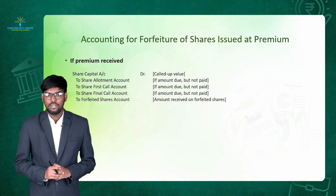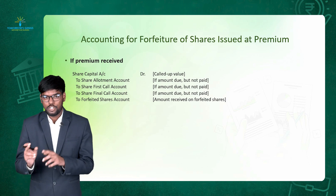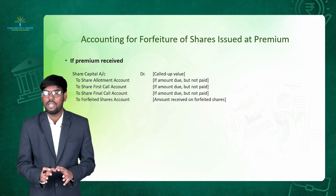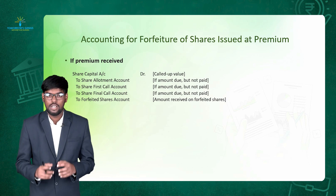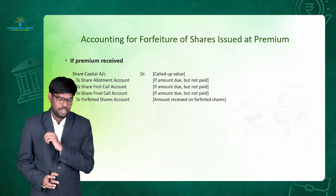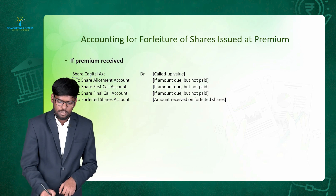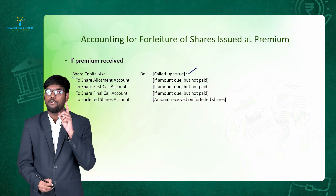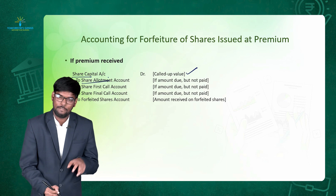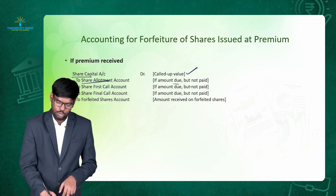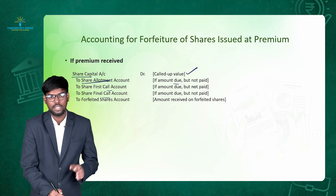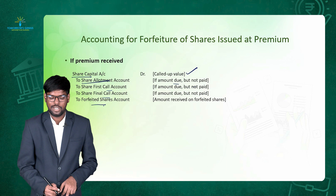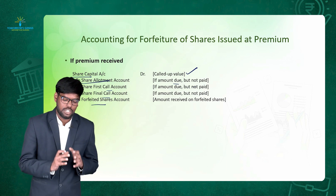Now we discuss forfeiture of shares when the premium is already received. When the premium has already been received, the general entry is the same as for issue of shares at par, because the premium amount already received is not going to be repaid. The entry is: debit share capital account for the called up value, then credit the amount not received — for example, credit share allotment account for amount due but not paid, or credit share first call account or share final call account for unpaid calls — and finally credit share forfeiture account for the amount received so far.